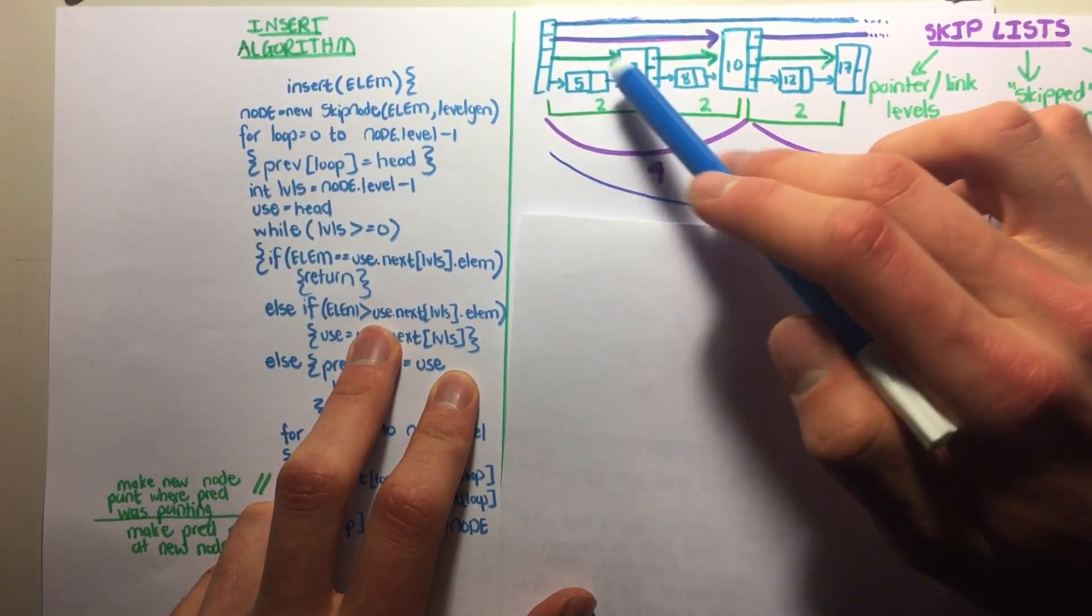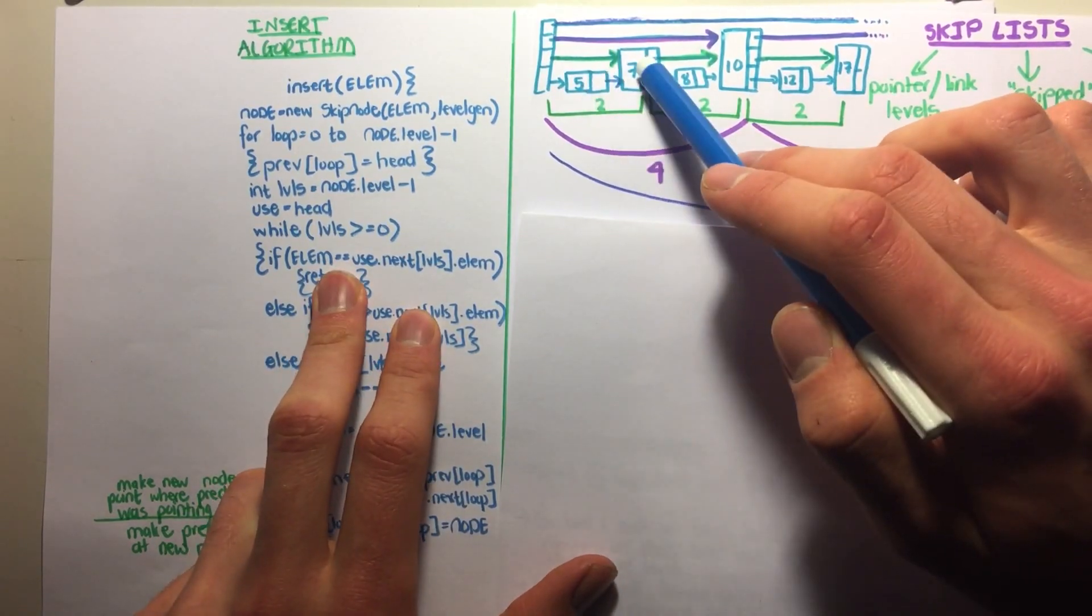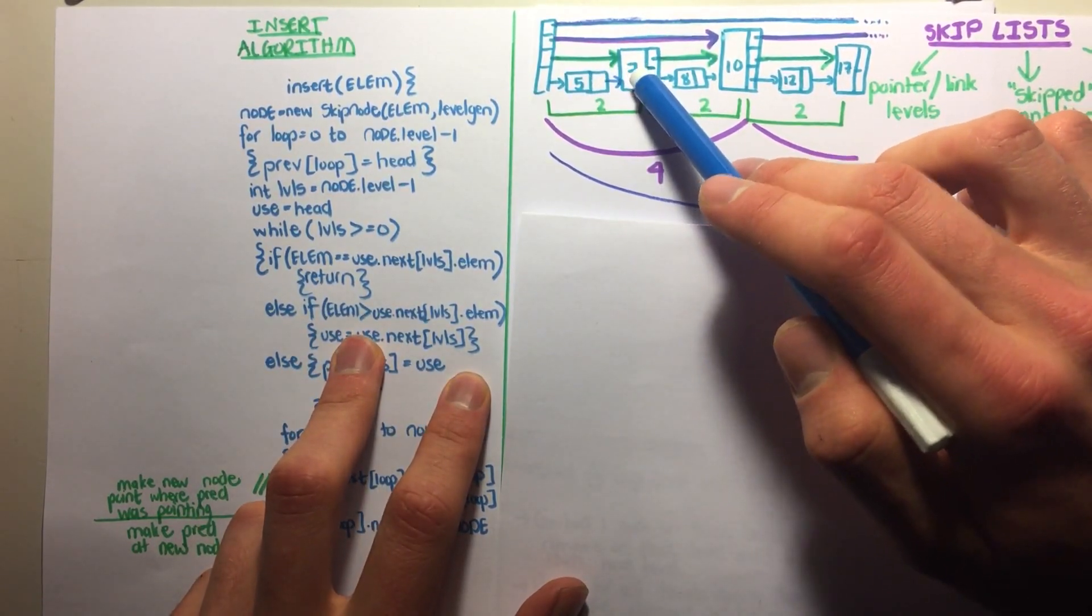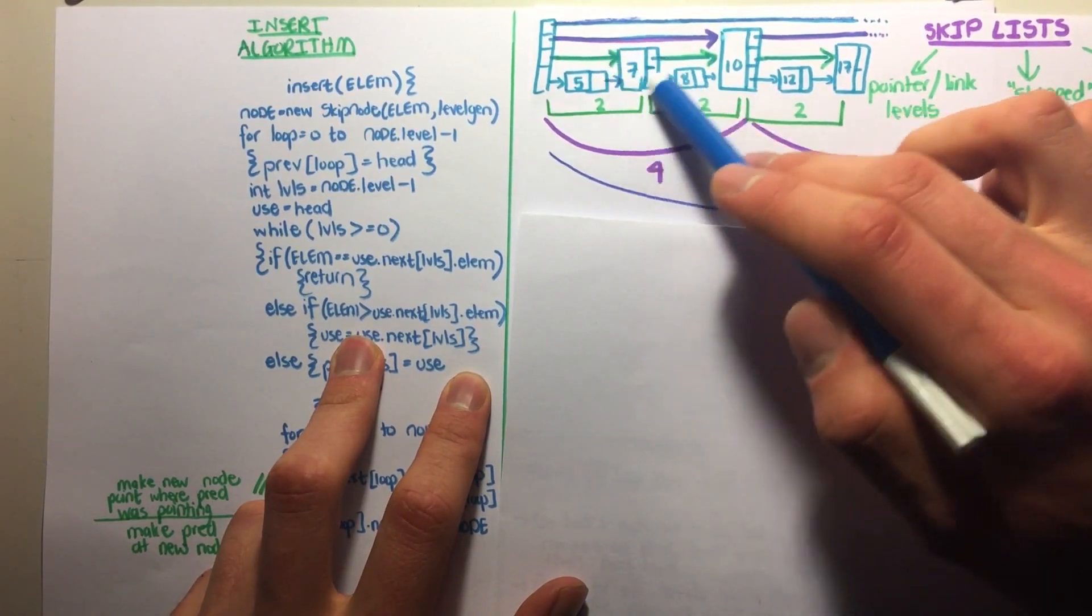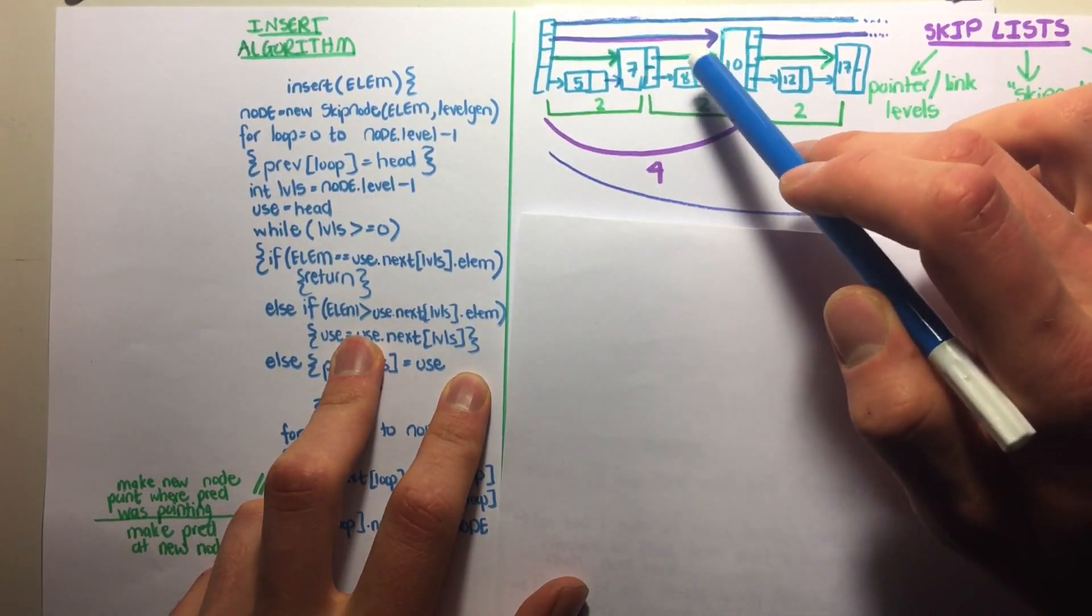Then we check for 7. Is it equal to 7? No. Is it greater than 7? Yes. Therefore use will become 7, and use dot next will then be 8.